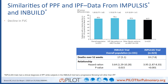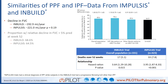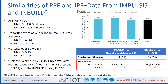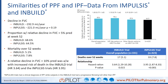We've learned from clinical trials on PPF and IPF that declines in pulmonary function are associated with mortality. This slide demonstrates FVC declines in the INBUILD and IMPULSIS trials, two trials looking at patients with ILD with a progressive fibrosing phenotype. A substantial proportion of patients had FVC declines, and those with a relative decline greater than 10% had a much increased risk of death — a hazard ratio of 3.64 in INBUILD and 3.95 in IMPULSIS, representing a three- to four-fold increased risk of death.